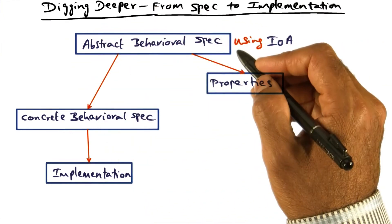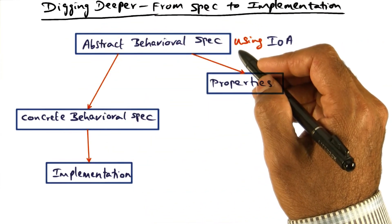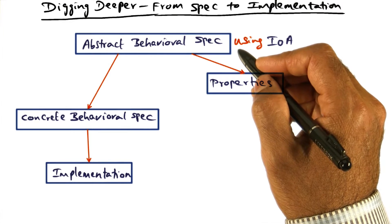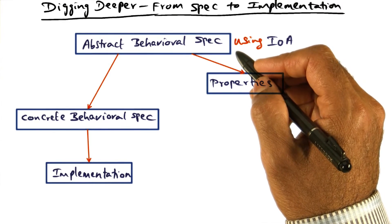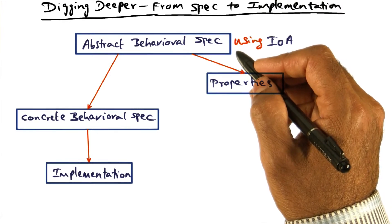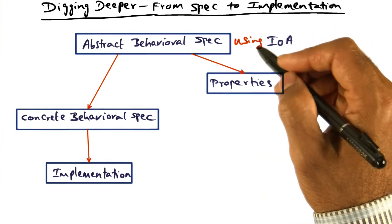Other behavioral specification properties you can have are things like, on every packet there should be an acknowledgement. That's another property that you want the protocol to have. You can express that using IO automata.